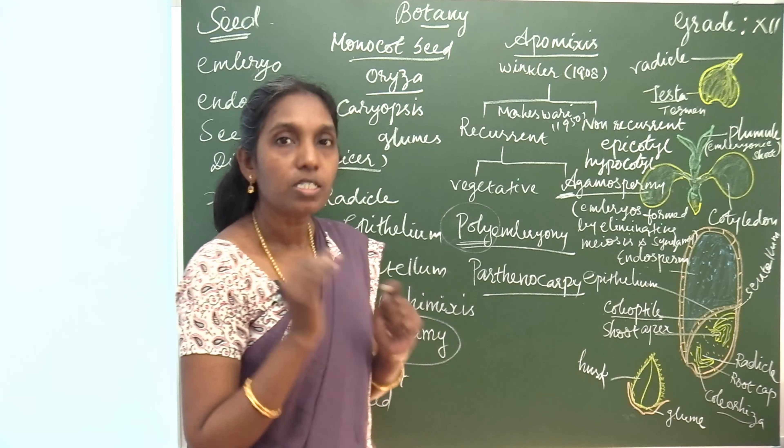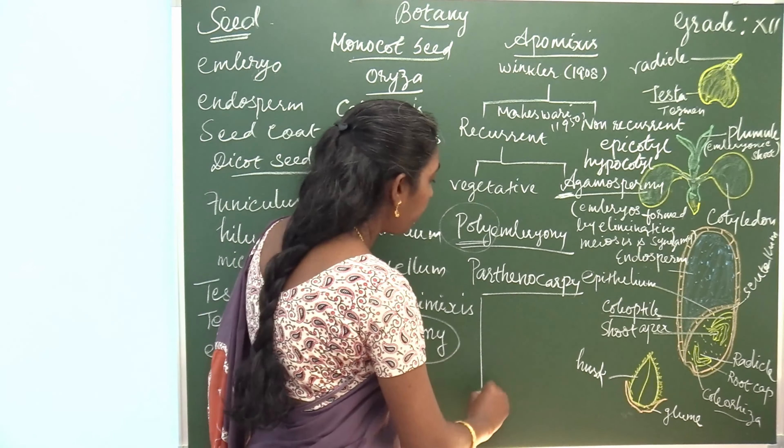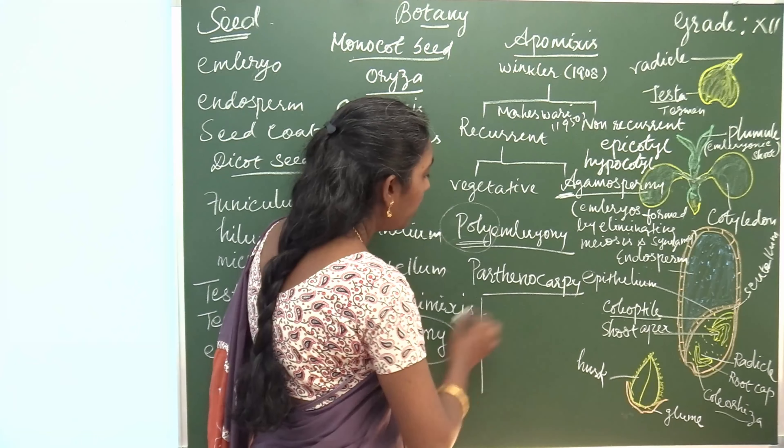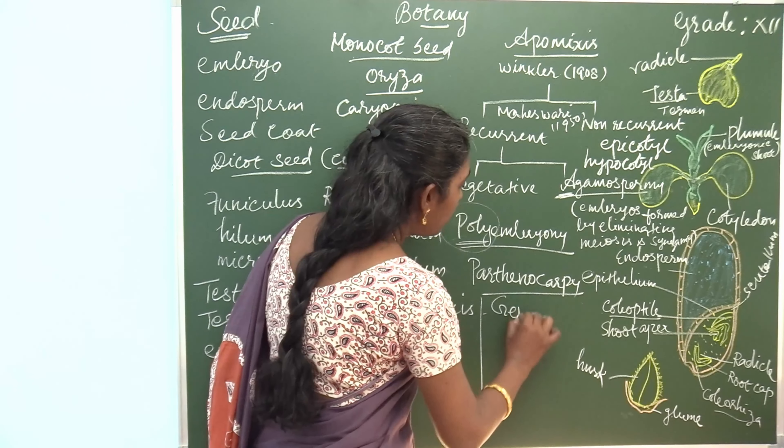Parthenocarpy is classified into three different types: genetically induced parthenocarpy, environmentally induced parthenocarpy, and chemically induced parthenocarpy.